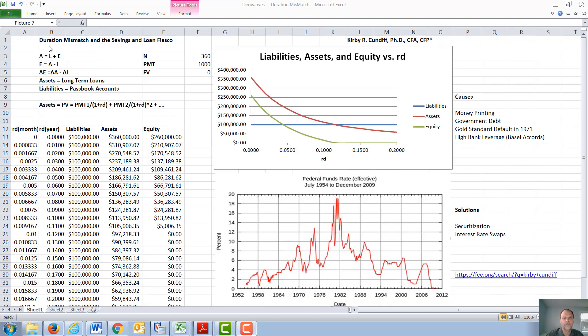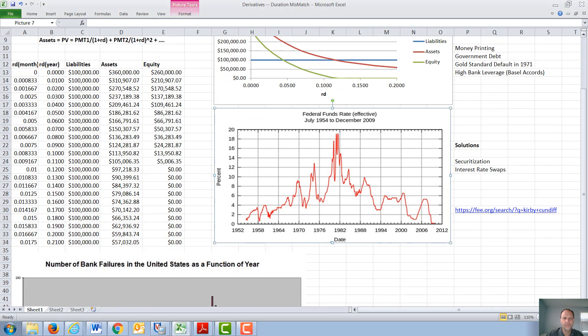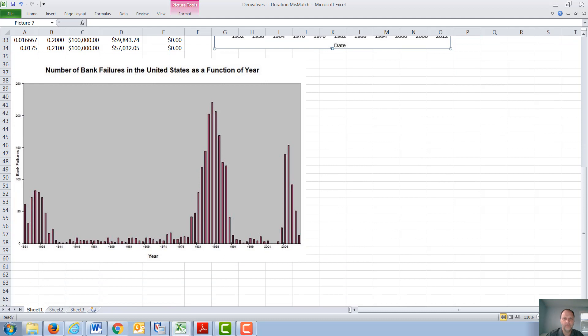In this video, we will discuss duration mismatch and the savings and loan fiasco. The savings and loan fiasco was one of three major banking crises in the United States in the last hundred years.